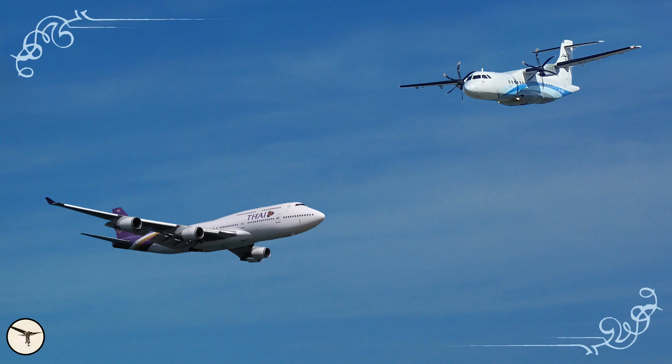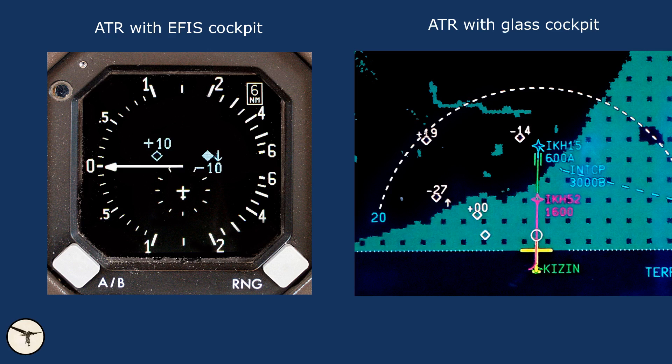The TCAS is a computer connected to the transponder of an aircraft. It receives transponder signals from other aircraft and computes the altitude difference and the closure rate between your aircraft and the other. Those aircraft are displayed as symbols on the VSI or the navigation display, together with the relative altitude and whether they are climbing or descending. The open diamond shows traffic that is not a concern for you. The filled diamond shows traffic that is closer to you and within plus or minus 1,200 feet.